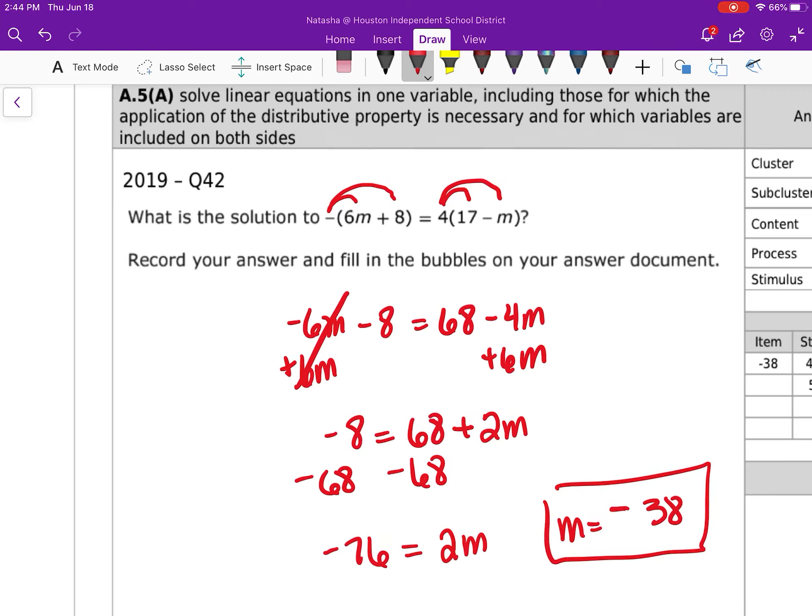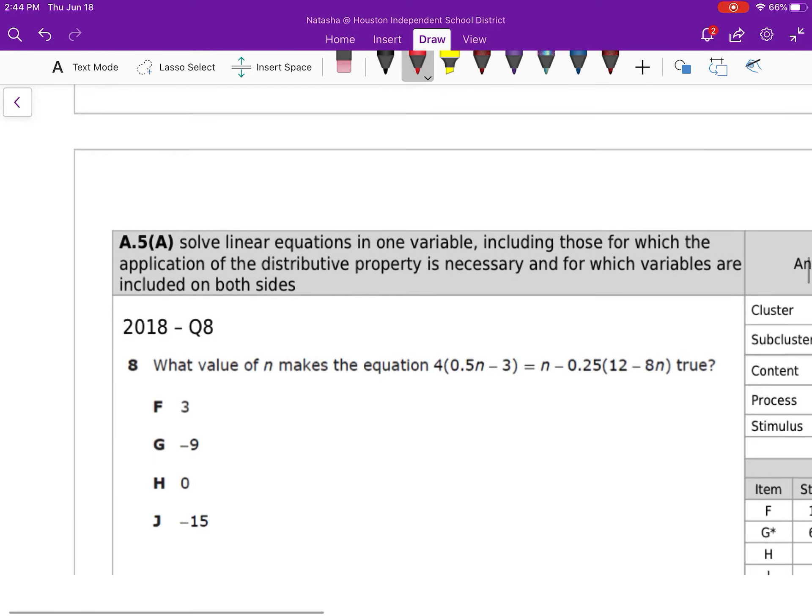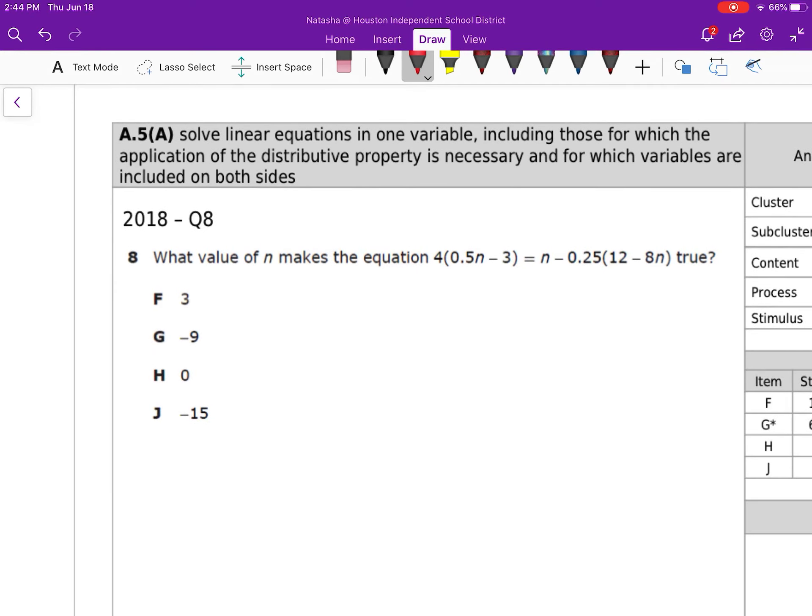So you would have bubbled negative 38 into the calculator. Next question, same thing. So we're doing the same thing here.